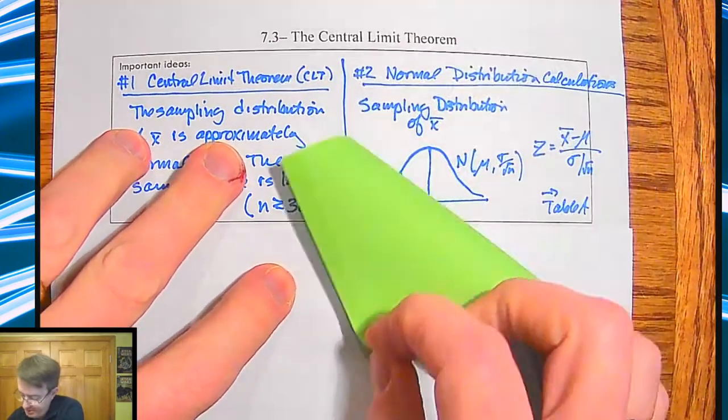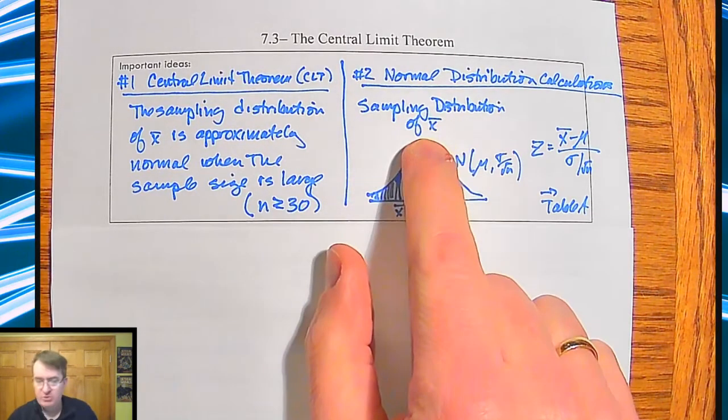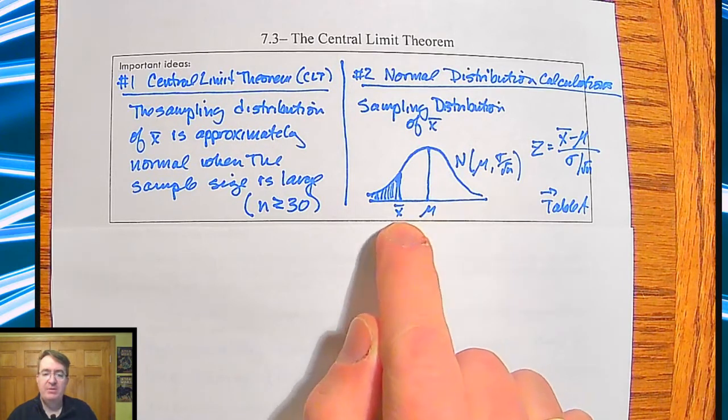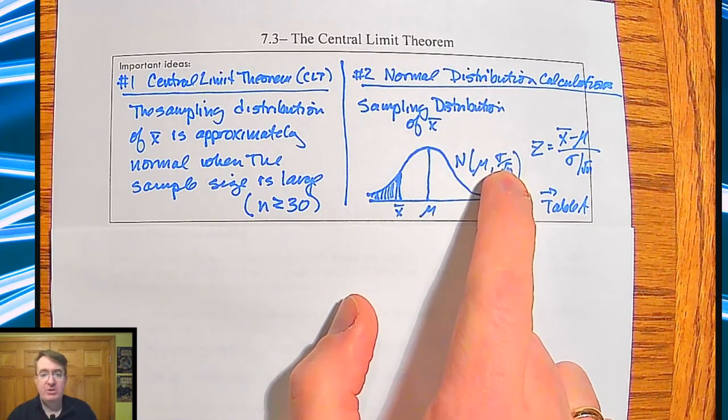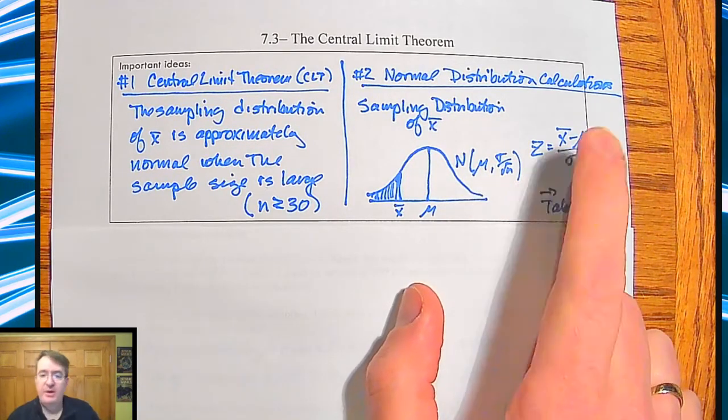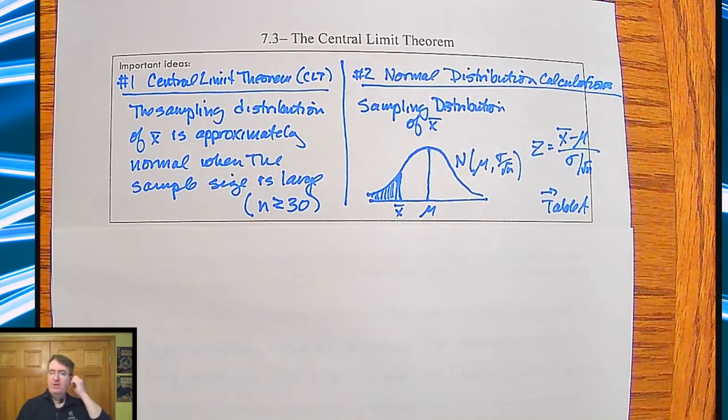The other thing here is that for normal distribution calculations, if you have a sample distribution of x-bar, you can treat it as normal. There's my mean. There's x-bar. Mean and standard deviation. Standard deviation is going to be sigma divided by square root of n. And so your z-score is x-bar minus your mean divided by standard deviation. And then you can use table A, central or cumulative normal CDF, that type of thing.